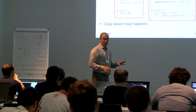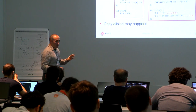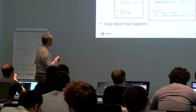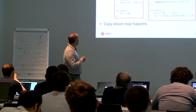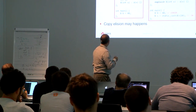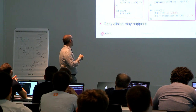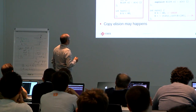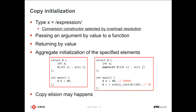There is something called copy initialization. Copy initialization happens when you write something like 'type x = some_expression'. The expression is evaluated and the conversion constructor is selected through overload resolution — basically, whatever this expression gives back, I'm trying to construct x with that. This also happens when I pass an argument by value to a function: if I call foo(5), the value 5 will be copied into the local variable on the stack.